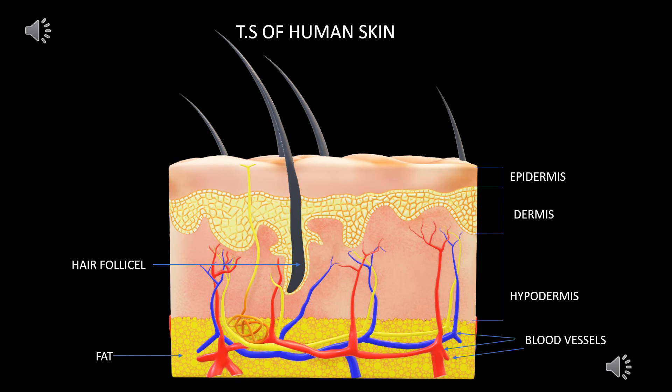The deeper layer, the subcutaneous tissue, also called the hypodermis, is made up of fat and connective tissue.